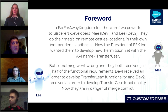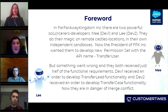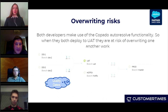But something went wrong in the user story — something is going wrong. Developers received only half of the technical requirements. They are going to create their own functionality in their own sandboxes, and they are going to be conflicting. A perfect user story never happens in real life.